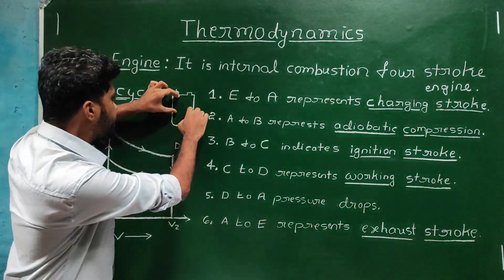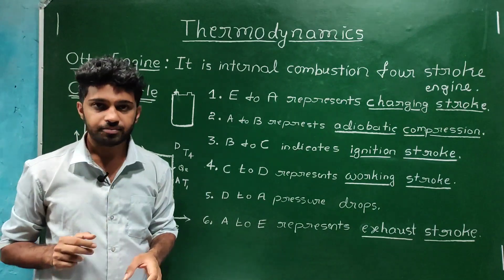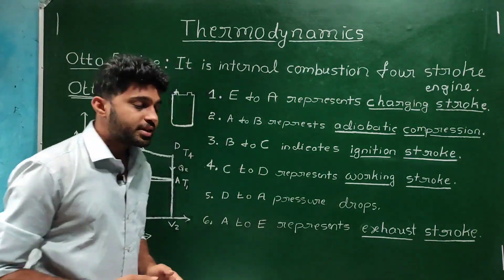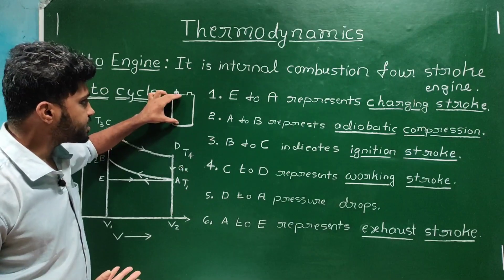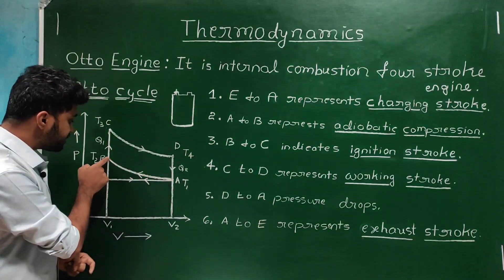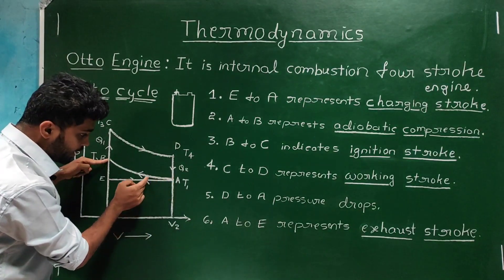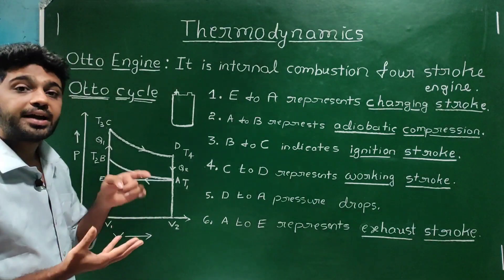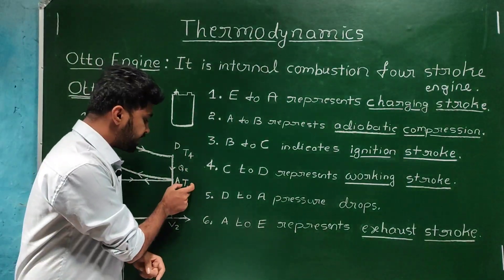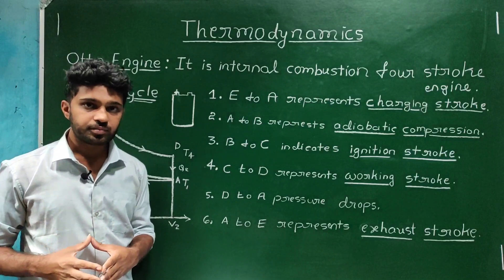During adiabatic compression, the air and petrol mixture is compressed, so the volume decreases from V2 to V1. At the same time, the temperature increases from T1 to T2.